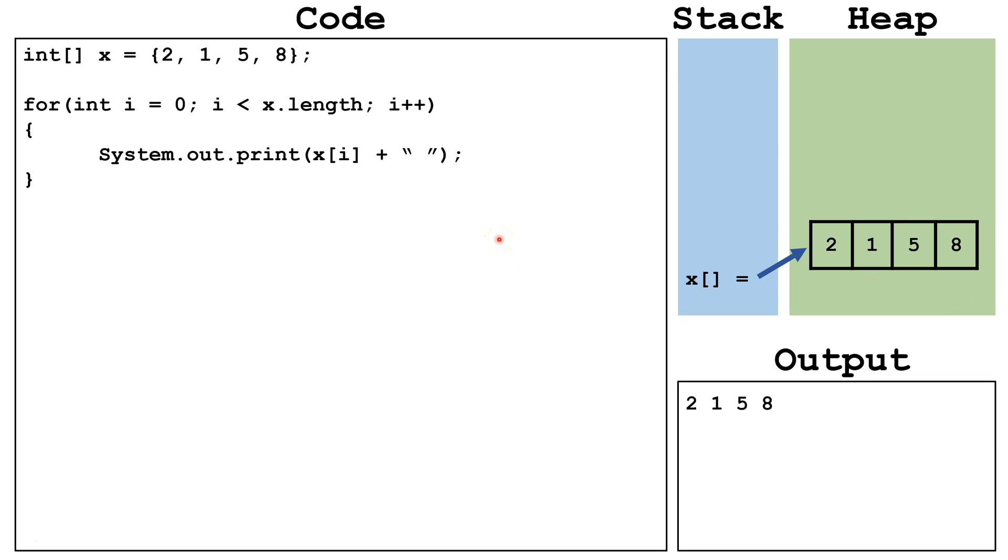Another modification we could make to this code is instead of printing out the data, we could modify the data. So here we're taking the data inside x index i, multiplying it by 2, and taking the product and returning it back into x index i. So if we ran this code, it would go through the array and double the data inside each index.